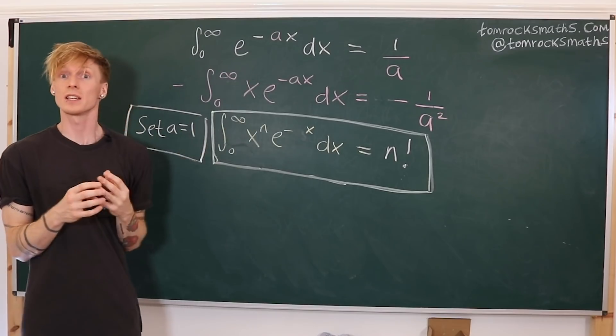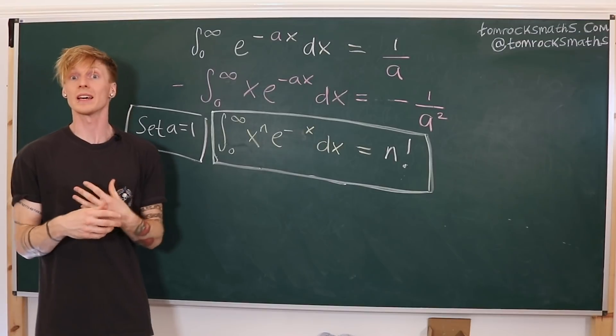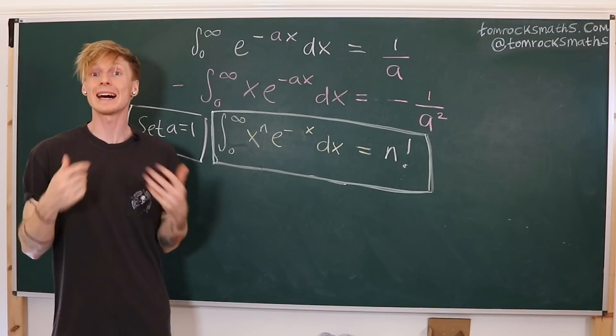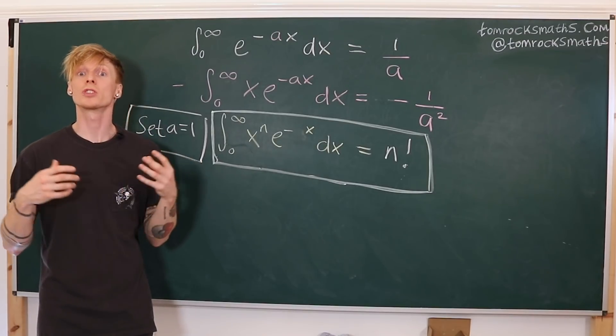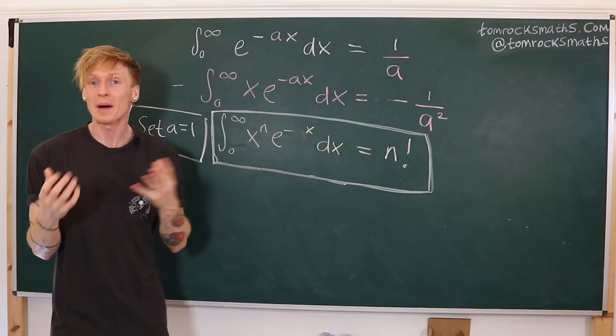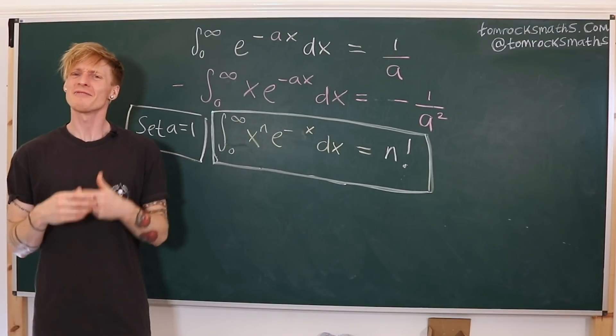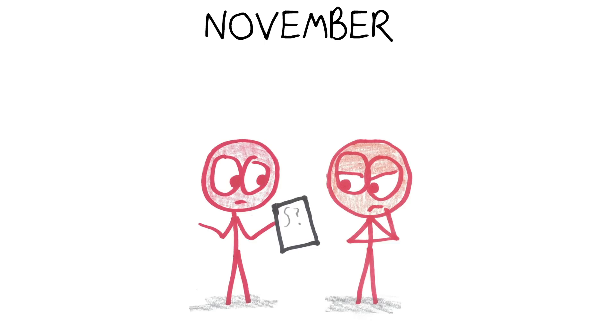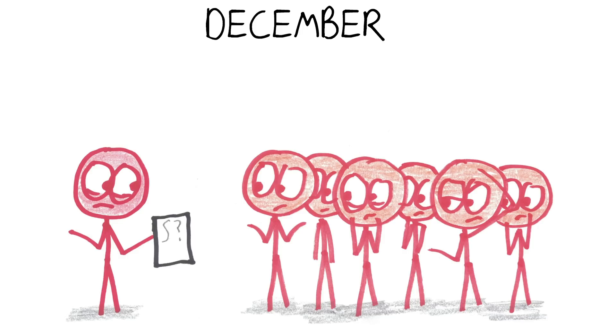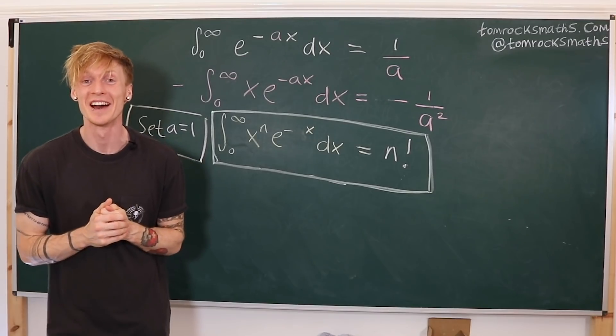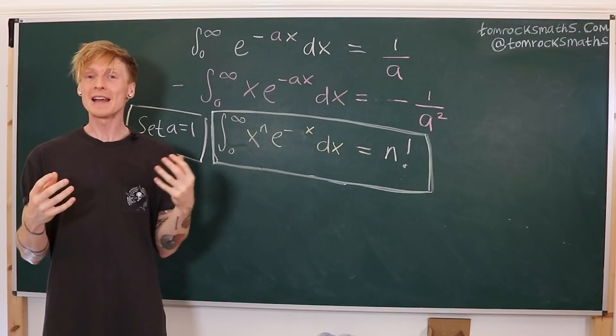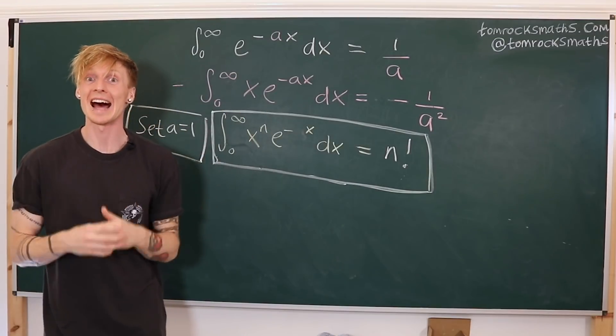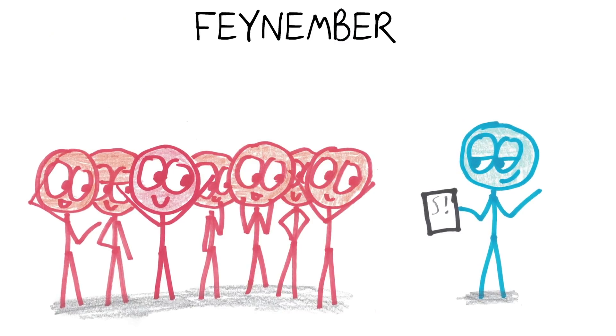This same trick of differentiating under the integral sign can be used in countless other situations, and indeed was readily employed by Feynman. A famous example comes from his time at the Los Alamos labs during World War II. He struggled to find his feet in several departments when he first arrived, until one day a researcher presented him with a problem that had stumped the researchers for three months. Three entire months working on the same integral. Can you imagine trying to do a homework question for that length of time? When Feynman saw the integral, he suggested trying differentiation under the integral sign, and supposedly the problem was solved in under 30 minutes.